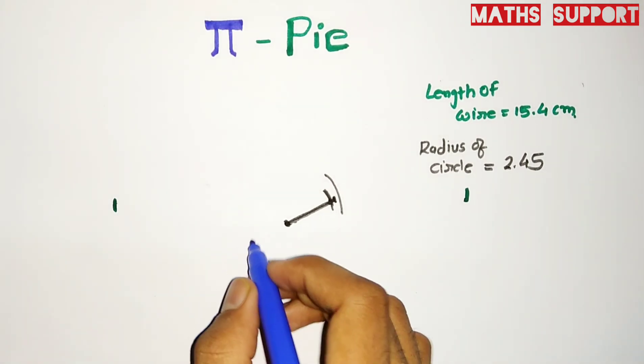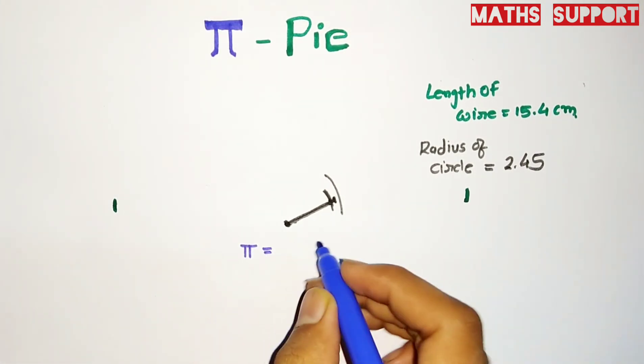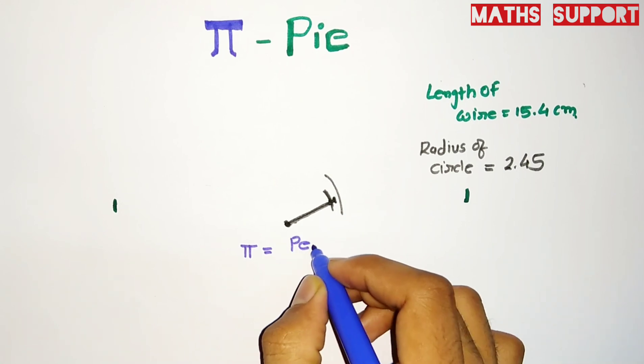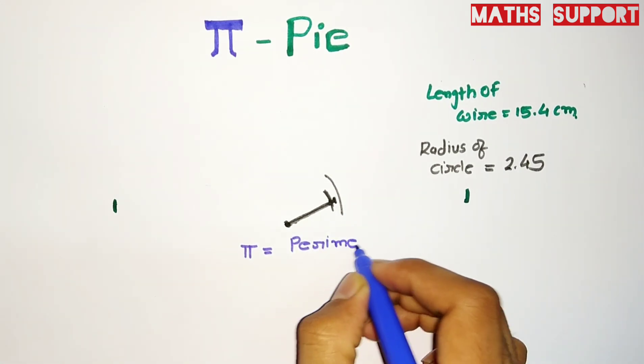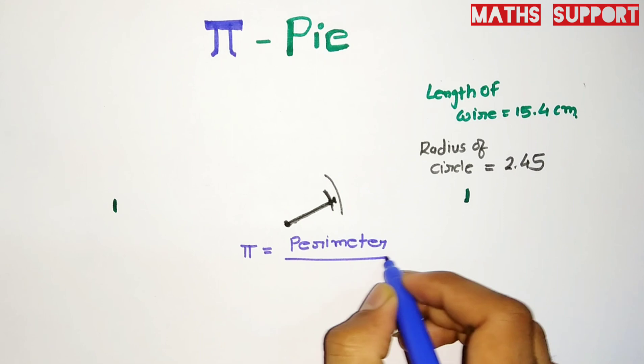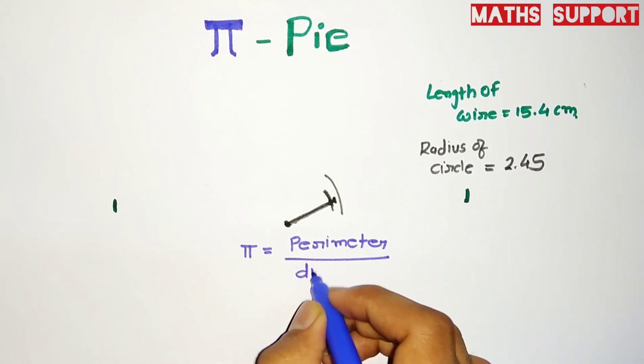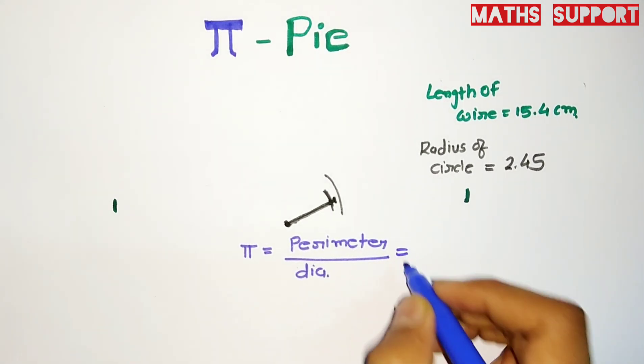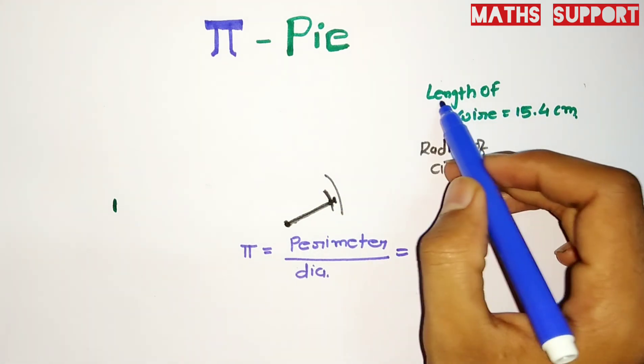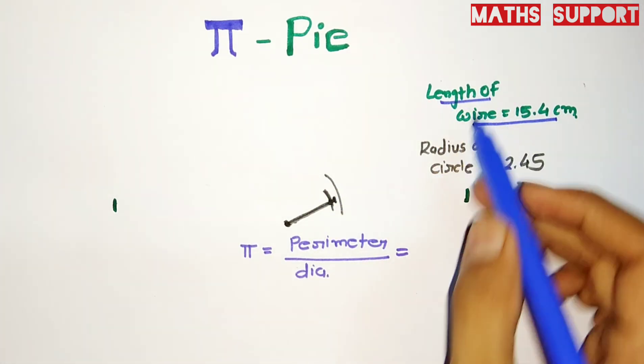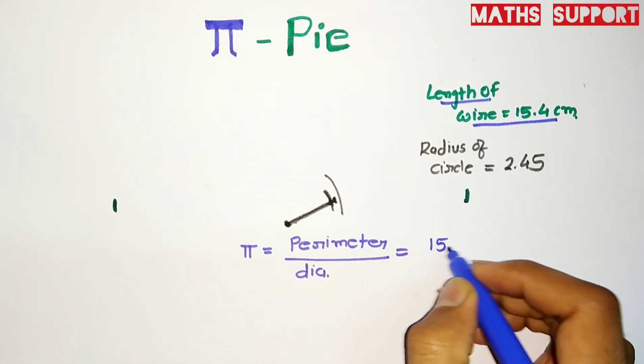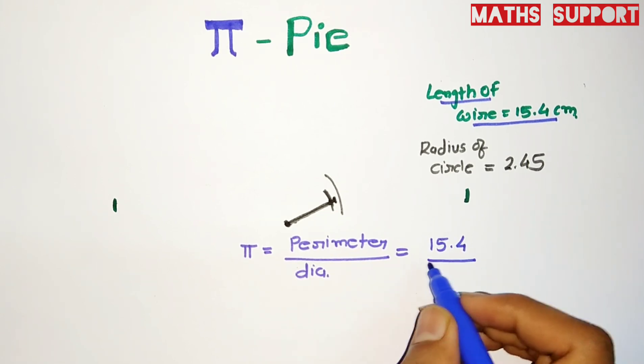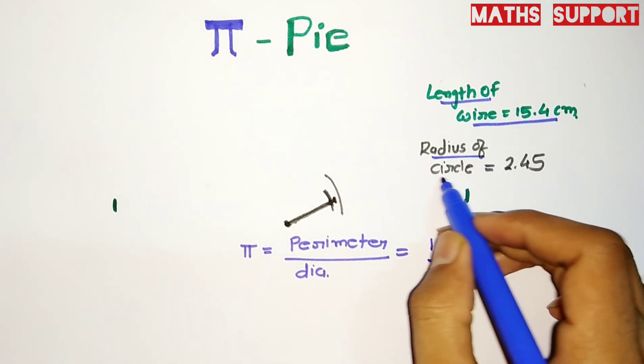As we all know, pi is defined as the perimeter of a circle divided by the diameter of the circle. The perimeter is nothing but the length of wire, which is 15.4. The diameter is 2 times the radius, and the radius of the circle is 2.45 times 2.